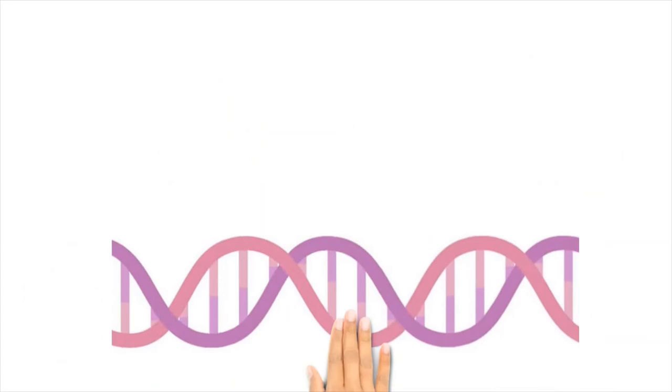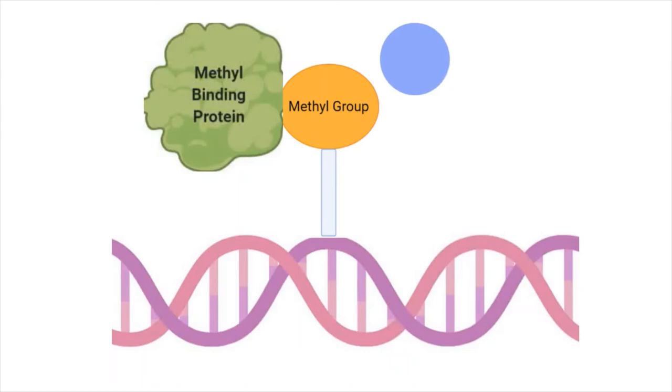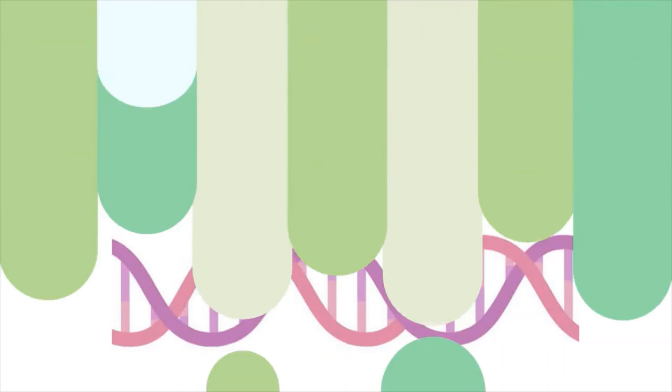Secondly, the methylated DNA recruits methyl binding proteins. Methyl binding proteins recruit additional factors which wrap the DNA up, making it inaccessible. The DNA becomes tightly compacted, shutting off the gene.